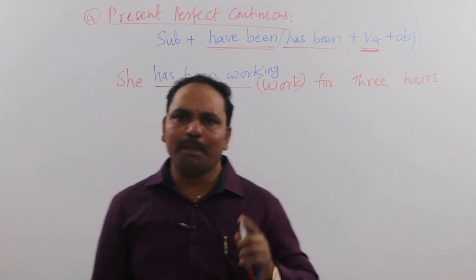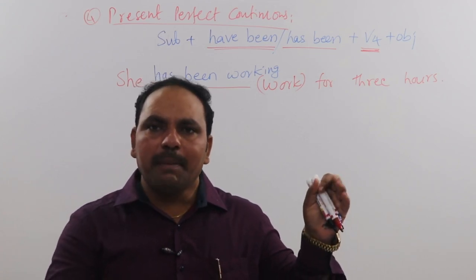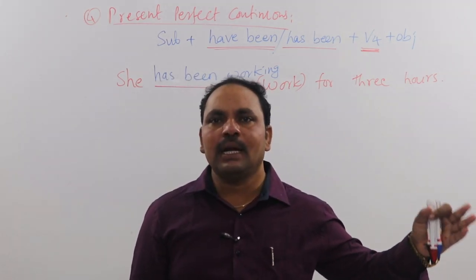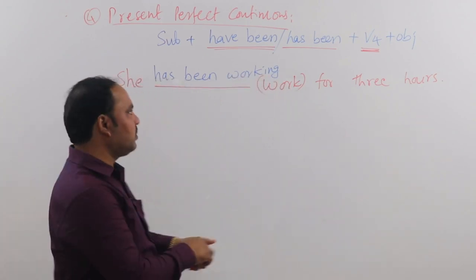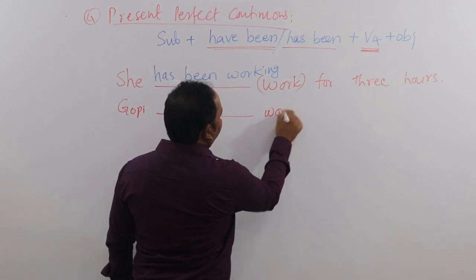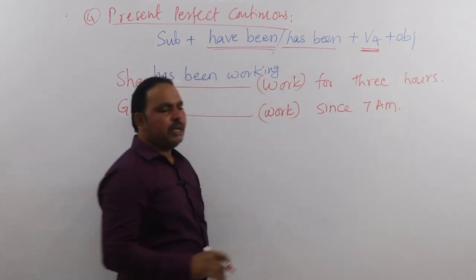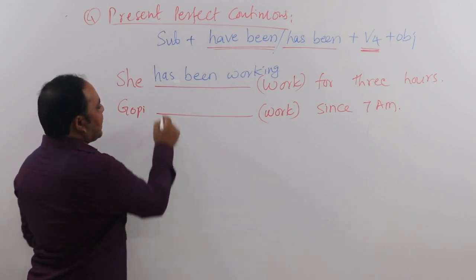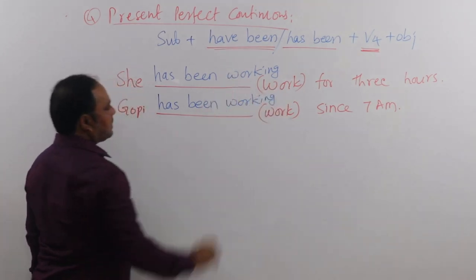Another example: Gopi started working from 7 AM in the morning and is still working. So: 'Gopi dash work since 7 am.' Since Gopi is still working, we use present perfect continuous. The answer is: 'Gopi has been working since 7 am.'